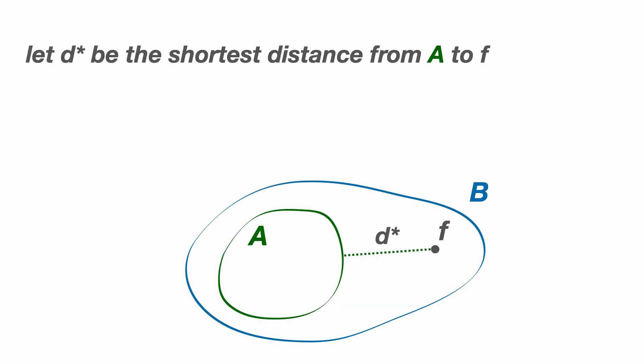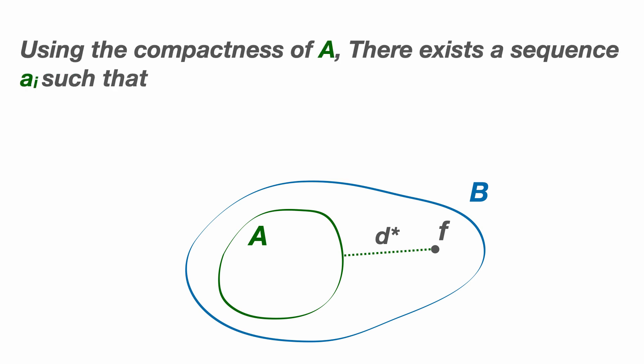So we've established that there exists a minimum distance between f and the set of approximations capital A, and we call this distance d star. We now need to show that there is an element of this set which actually is this distance from f and is closer to f than any other element in capital A, or at least the same distance. This is where the compactness of capital A becomes very useful. We can say that there exists a sequence of elements a sub i in capital A such that the distance between a sub i and f converges to d star as i tends towards infinity. Let's call the limit point of this sequence a plus, and to give away the ending, we'll now show that a plus is the best approximation to f.